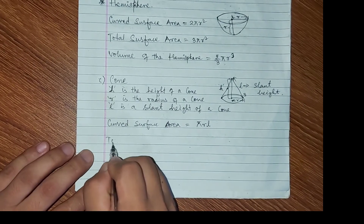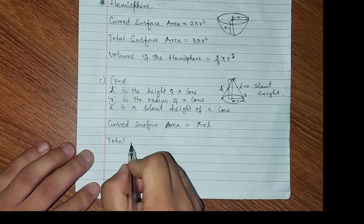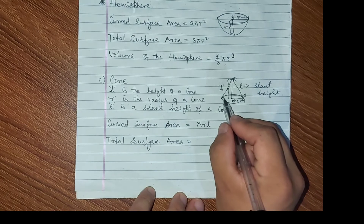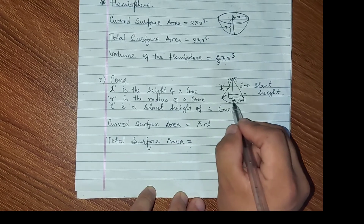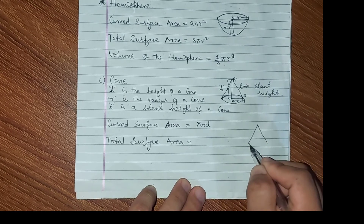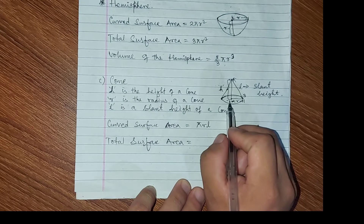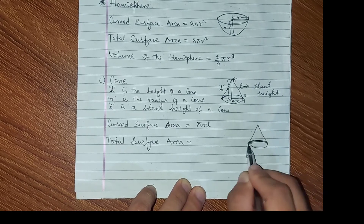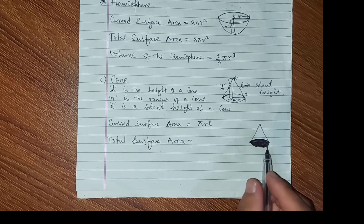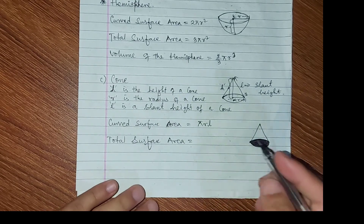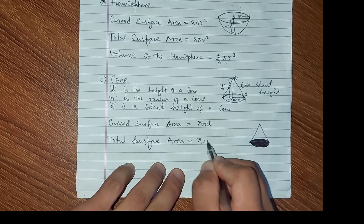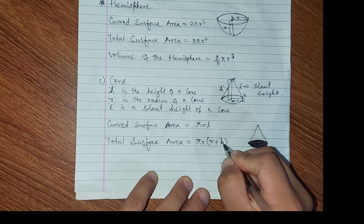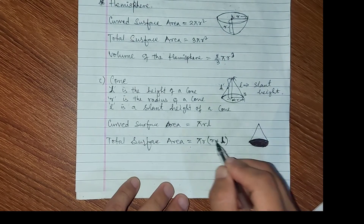The curved surface area of a cone is equals to πrl. The total surface area — we add the base area. The base area is πr². So to cover the hollow base, we add the base area. The total surface area formula is πr(r + l).